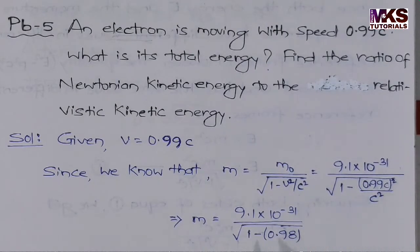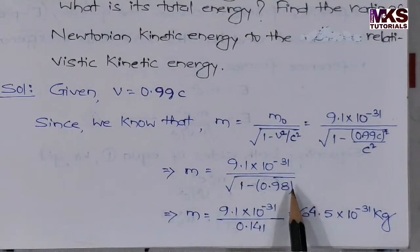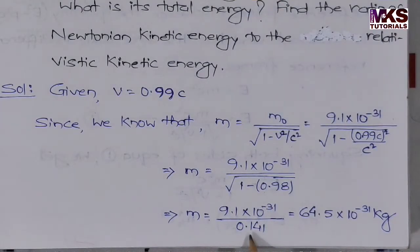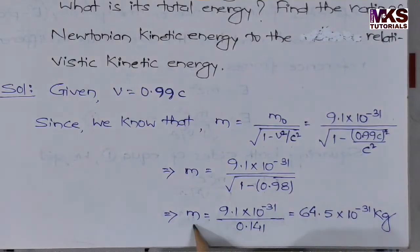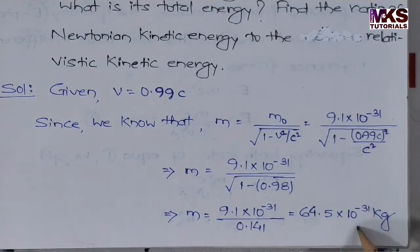When you square 0.99c, you get 0.98c². Then in the numerator the value is 1, and under the square root you get 0.141. Solving, the relativistic mass m comes out to be 64.5 × 10⁻³¹ kg.